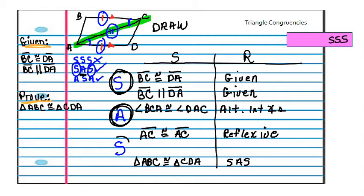So yes, we have a side that's congruent. We can check that off the list. And now we can say, because of side-angle-side, that triangle ABC is congruent to triangle CDA.